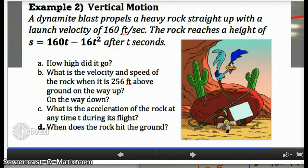Next we look at number c, or letter c. c says what is the acceleration of the rock at any time t during its flight. So you know that acceleration is the second derivative, and when it says the acceleration at any time t, they mean that they want the function for the second derivative. You're not going to plug anything in for t, you're just going to keep it as a function.